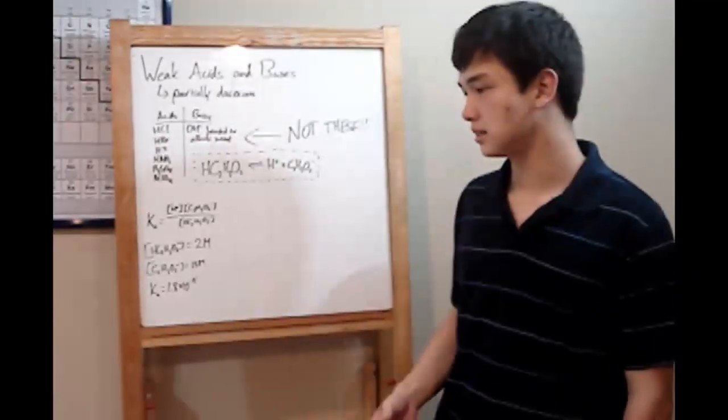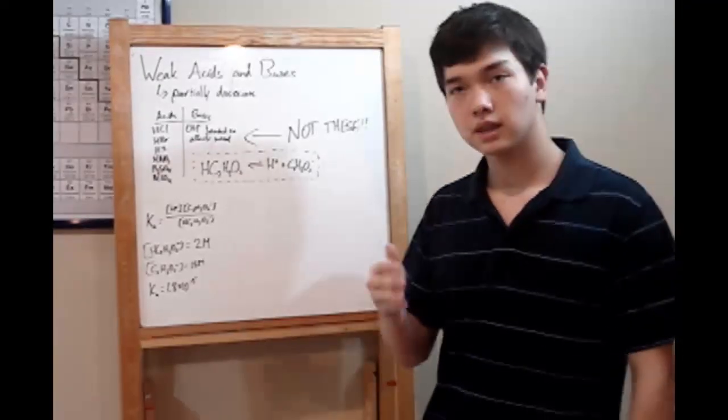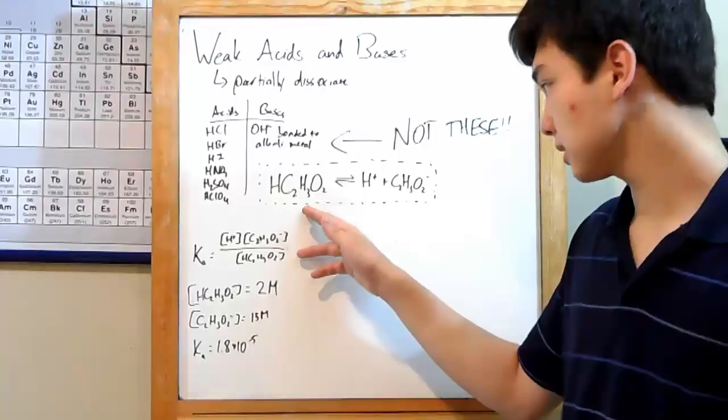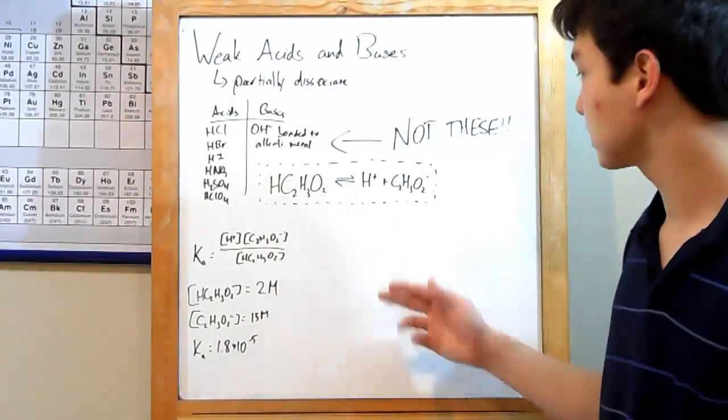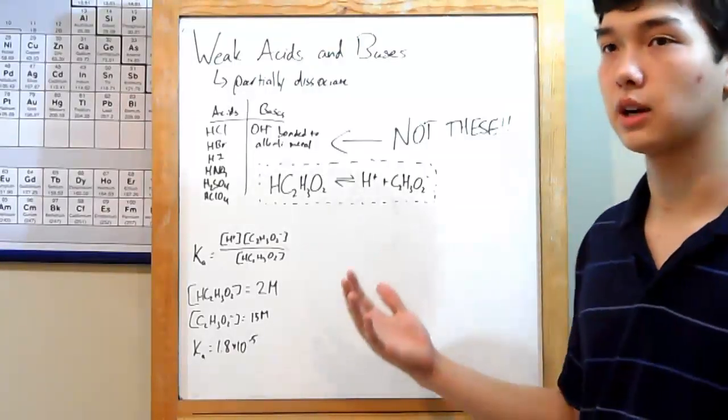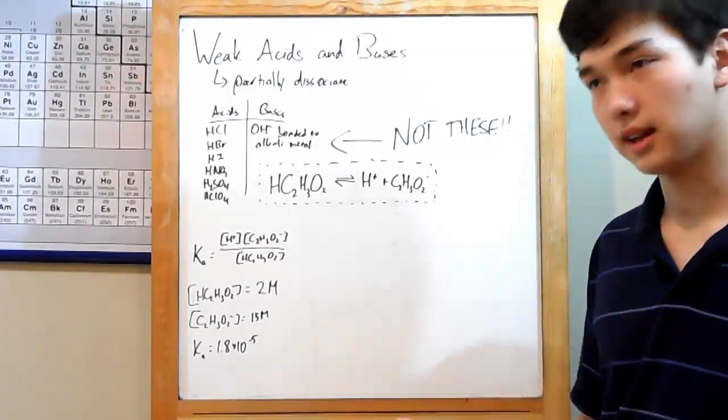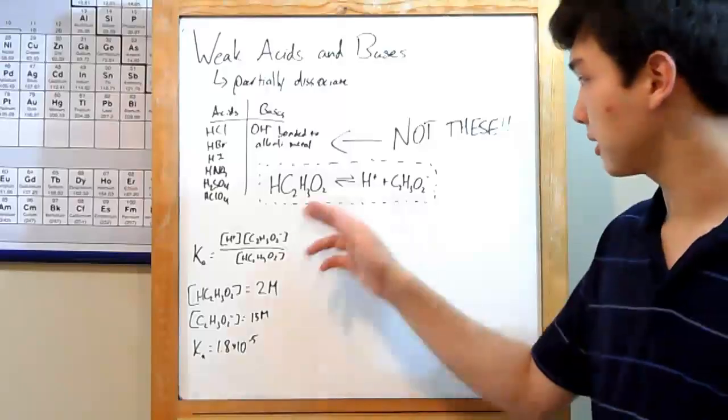When you put an acid or base, as long as it's weak, into water, it'll stay as itself and also break off into ions. These ions will establish an equilibrium. Ions will come off and also they'll reform into your weak acid or base.